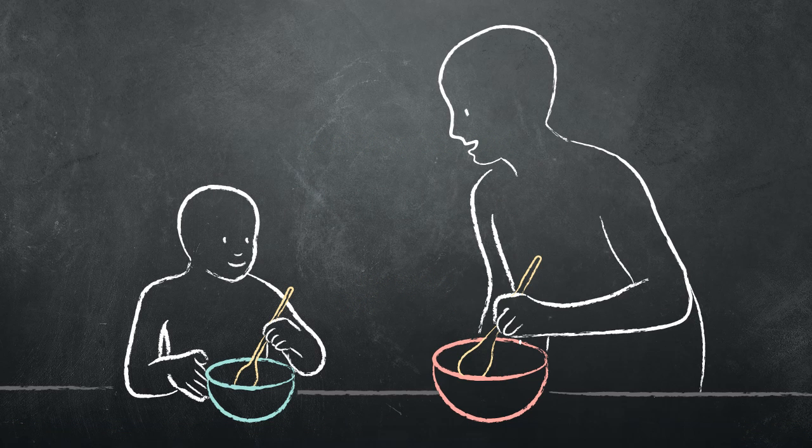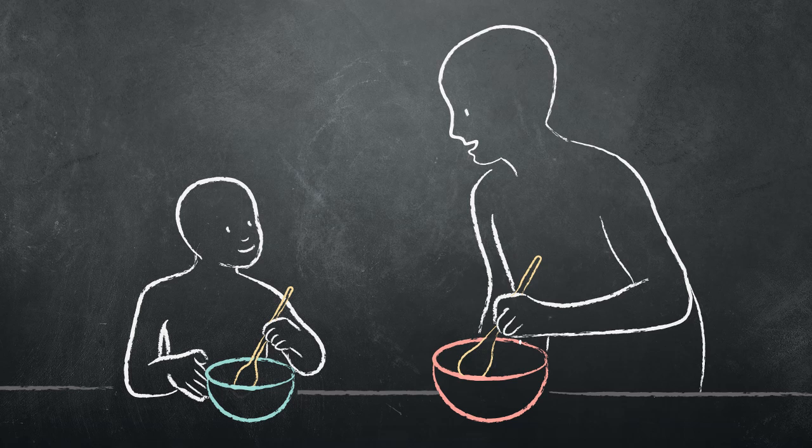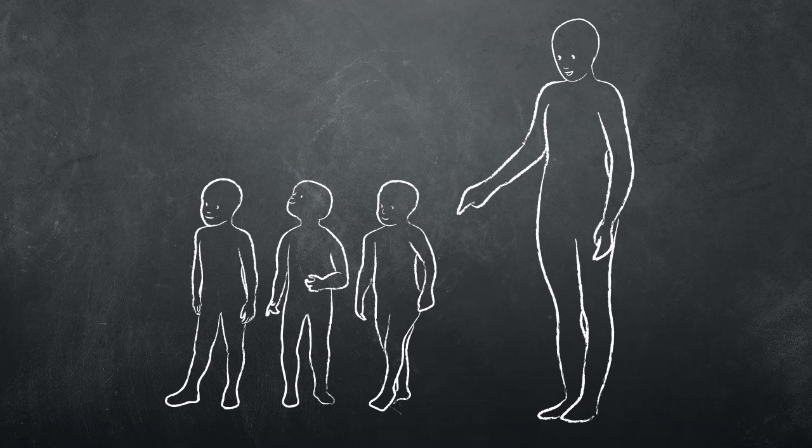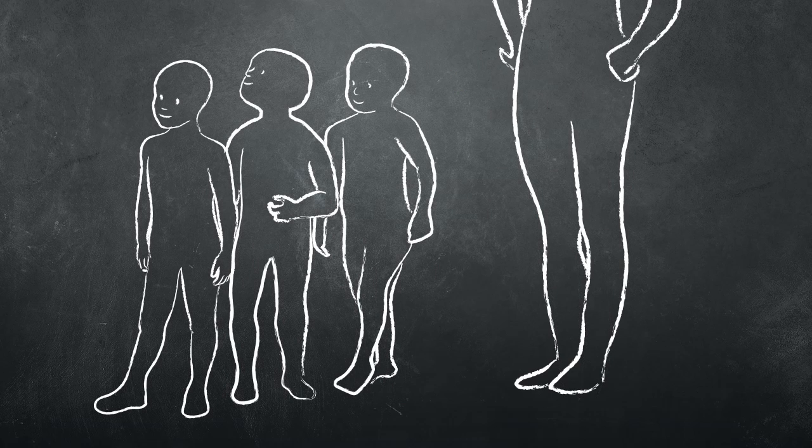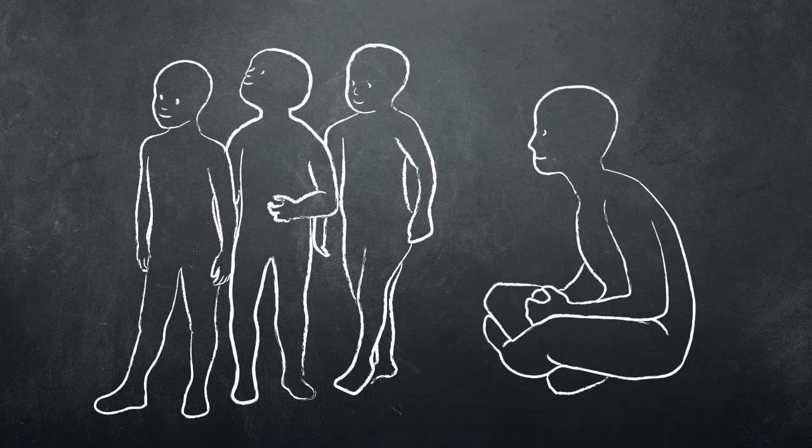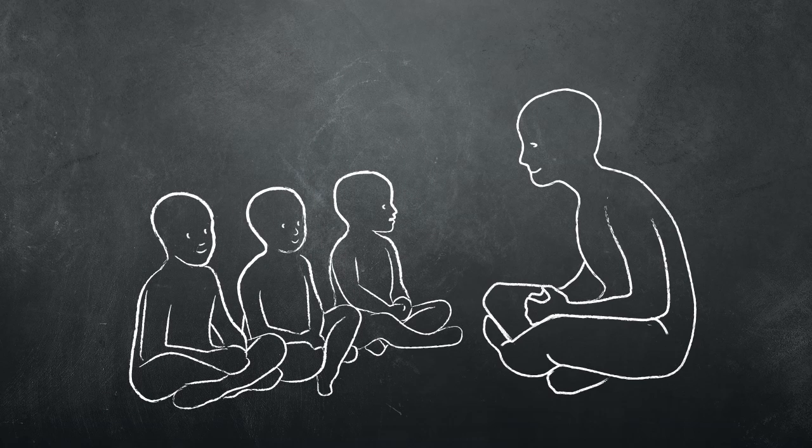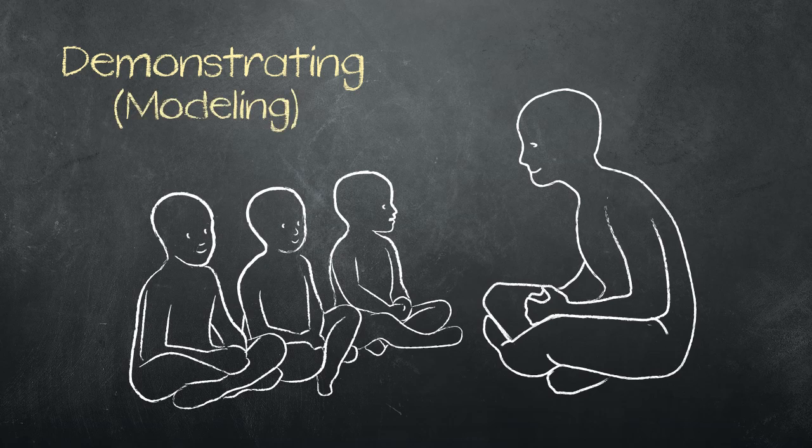Children learn by copying what they see others do. So rather than just telling students what to do, it is more effective for the teacher to show them what to do. This method is called demonstrating or modeling.